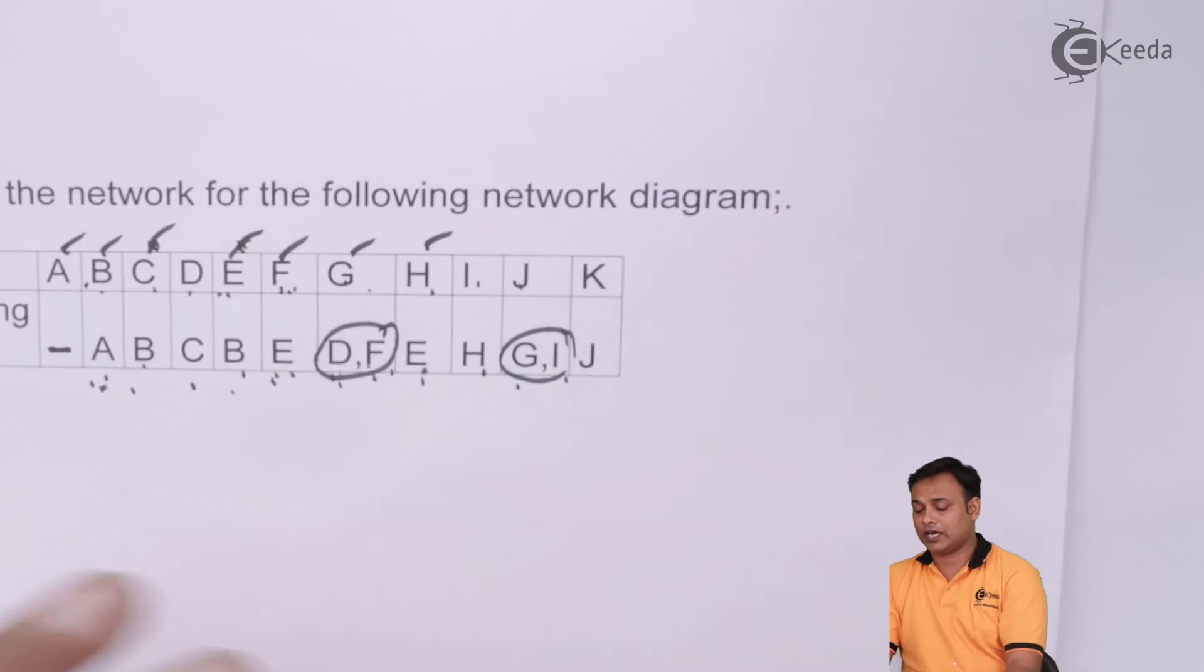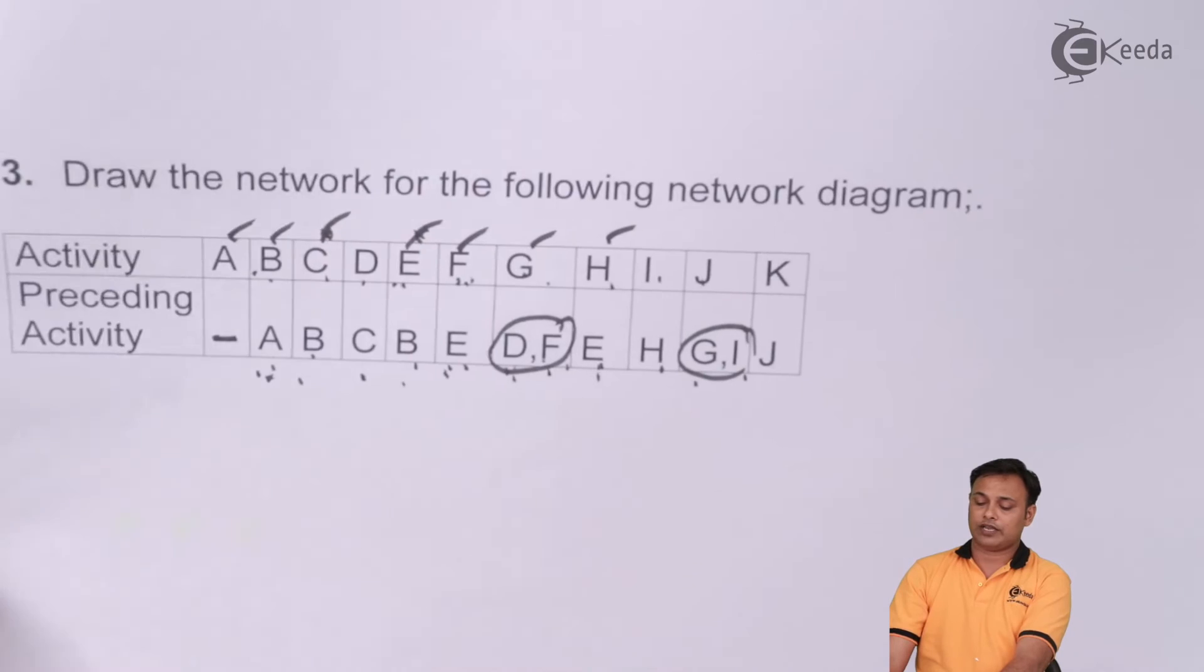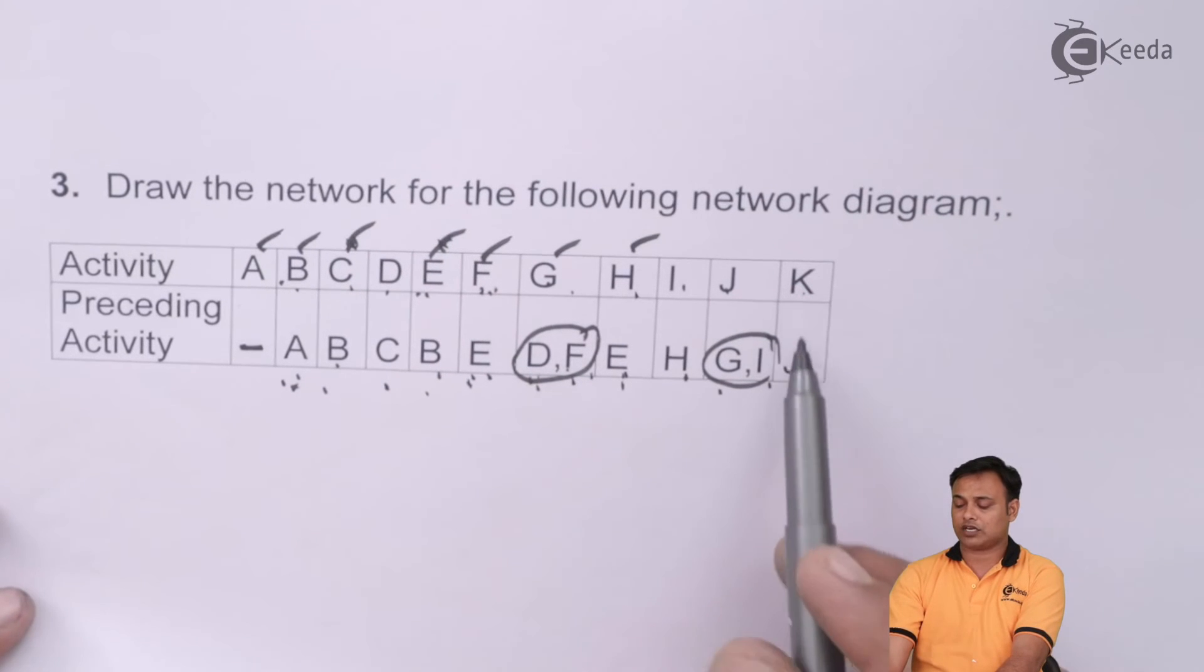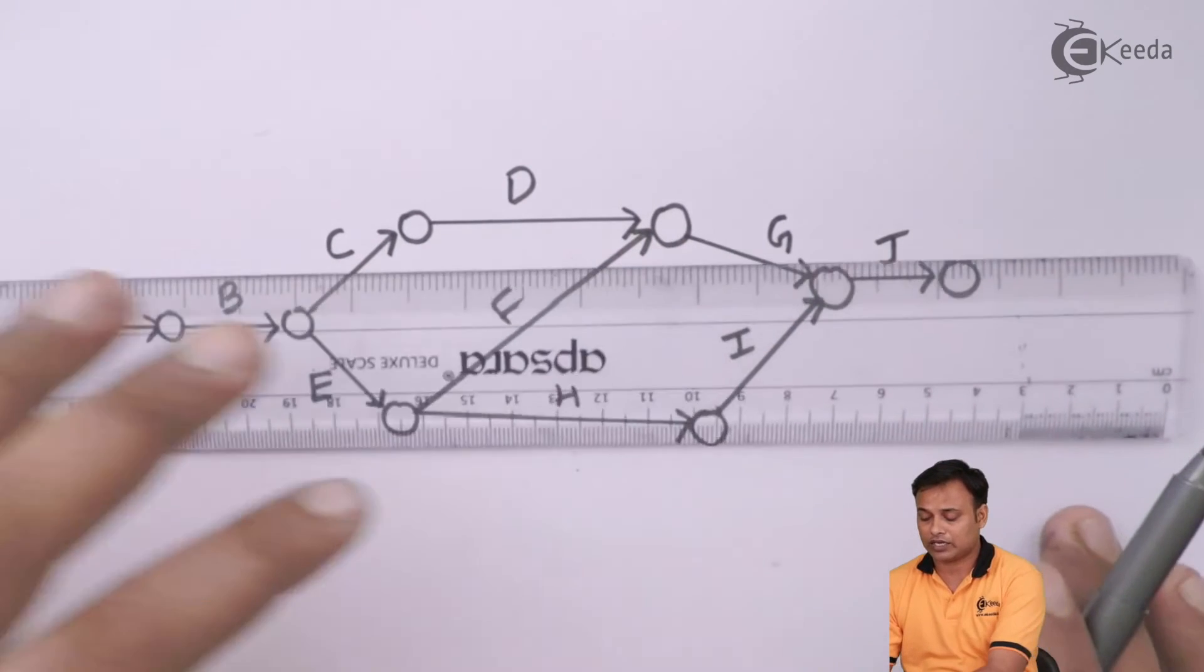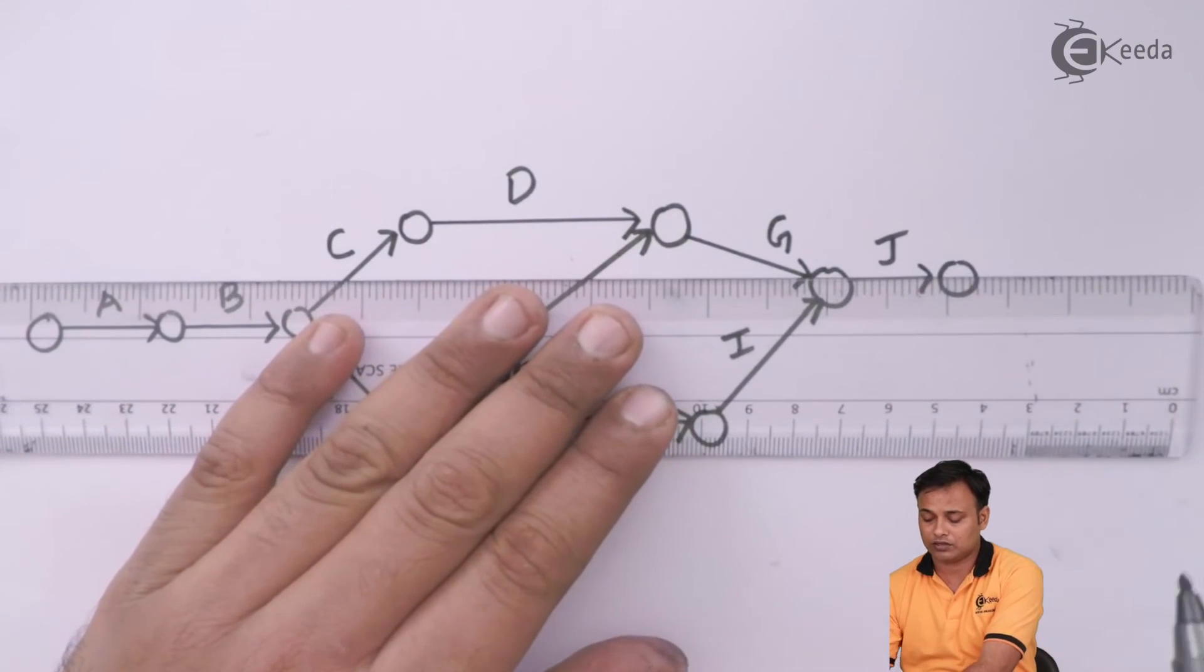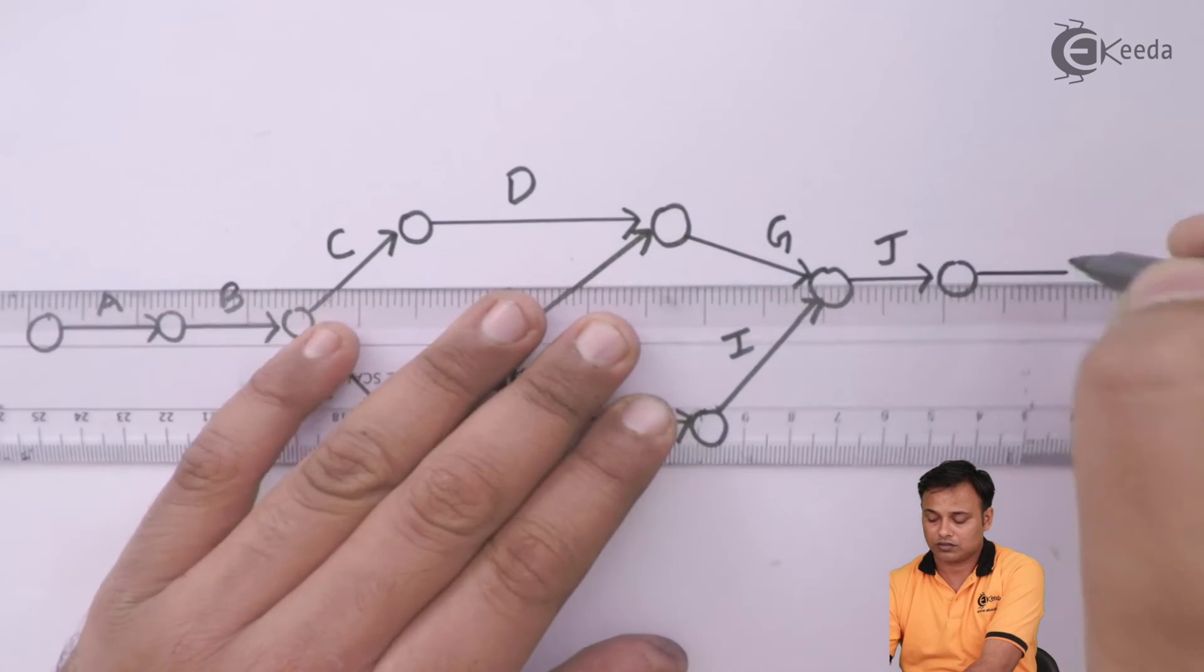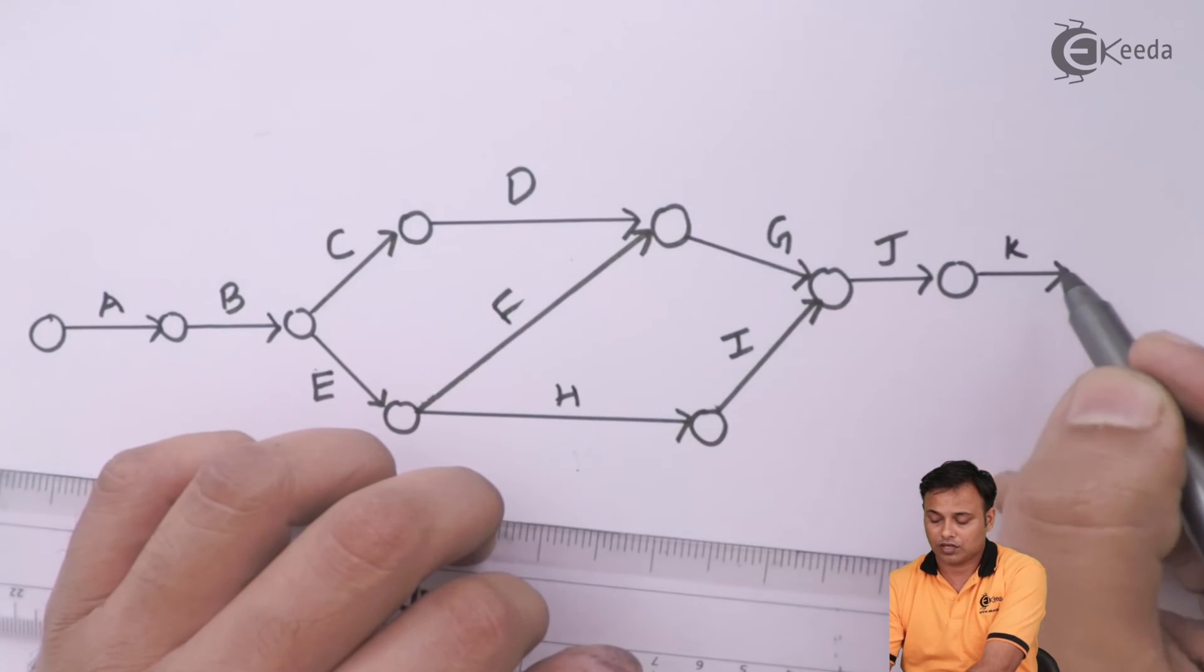At last I have the final activity that is K which comes after J. Last activity after J will be K.